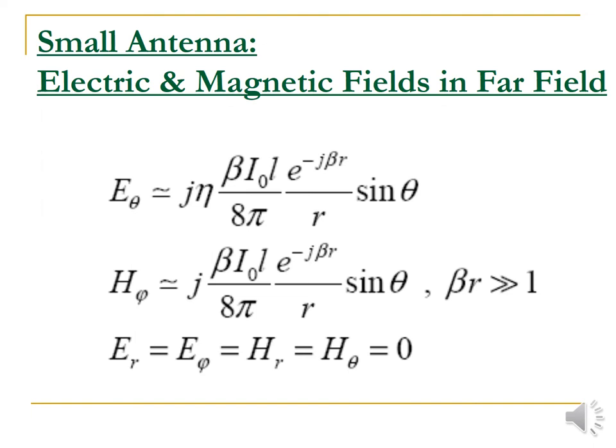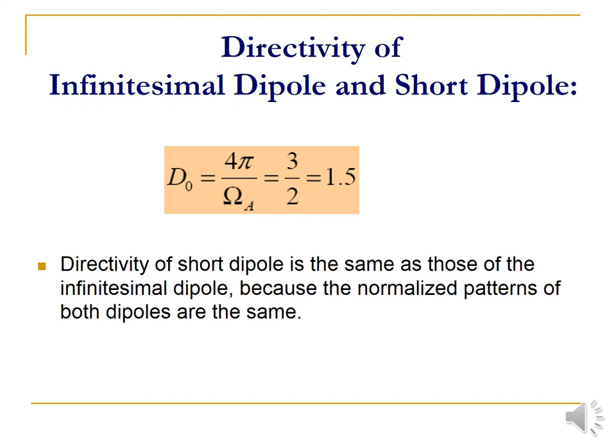Similarly, for the small antenna, the electric and magnetic fields in the far field are: E_theta ≈ j × eta × beta × I_0 × L × e^(−jβR) / (4pi × R) × sin(theta). Similarly, H_phi and E_r can be expressed. The parameters theta, phi, and R are the three parameters used for representing the electric and magnetic fields in the far field region.